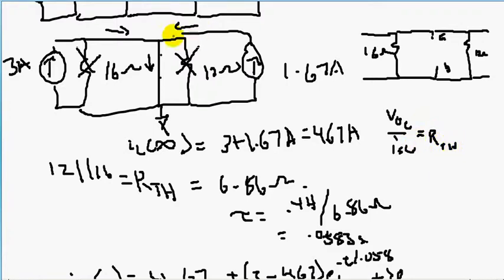But there is a shortcut. Notice that we have independent sources in our circuit. If we have only independent sources, we can find R_th directly. First, you remove the load — our inductor — by cutting it from A and B, and zero out independent sources.